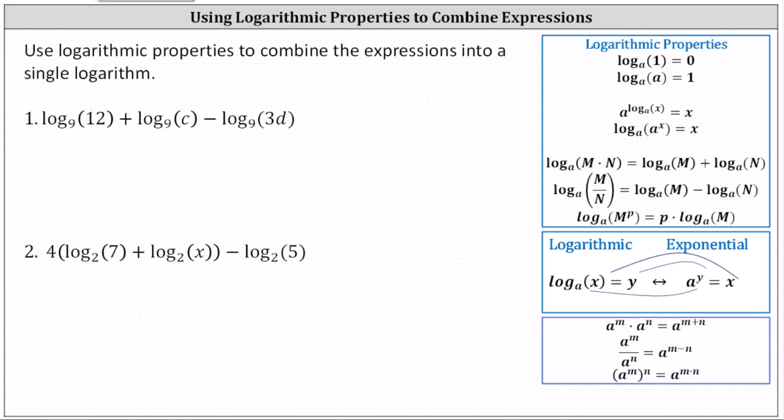Use log properties to combine the expressions into a single logarithm. For number one, we have log base nine of 12 plus log base nine of C minus log base nine of 3D. Notice all the logarithms are base nine, and therefore we can apply the log properties.